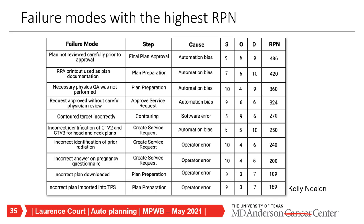Looking at the failure modes with the highest risk priority numbers (RPN), if you look at the cause column, there's not much caused by incorrect algorithms. Instead, there's a lot related to automation bias and operator error—things that can happen because of using AI tools but might not have happened otherwise. Automation bias is what happens when you get so used to the tool's results being good that you rely on them too much. Operator error is when something is entered incorrectly by the user—not the AI's fault, but it happens.